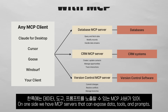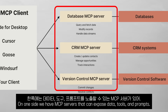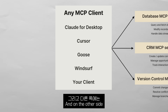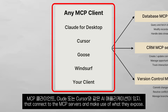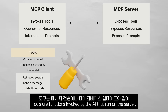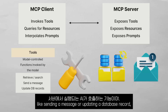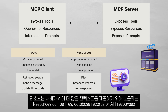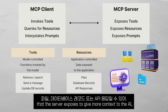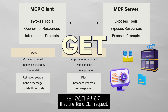The way it works is simple. On one side, we have MCP servers that can expose data, tools, and prompts. On the other side, we have MCP clients — AI applications like Claude or Cursor — that connect to the MCP servers and make use of what they expose. Tools are functions invoked by the AI that run on the server, like sending a message or updating a database record. They are like a POST request to an API endpoint. Resources can be files, database records, or API responses that the server exposes to give more context to the AI. They are like a GET request.